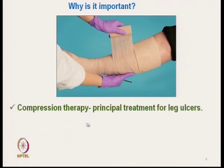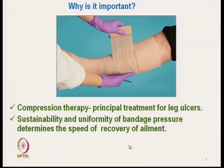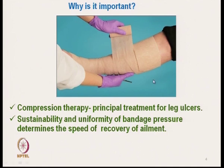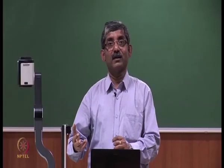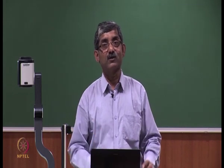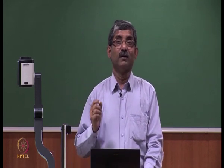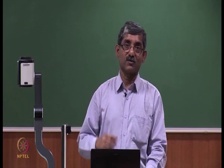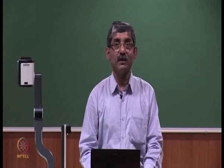Compression therapy is the principal treatment for leg ulcer. The sustainability and uniformity of bandage pressure determines the speed of recovery. We apply pressure through the bandage, but it is very important to understand the sustainability of pressure. The pressure should be maintained, but due to creep or other relaxation characteristics, this pressure sometimes gets reduced gradually — that is called pressure drop. If pressure reduces due to relaxation of the structure, the effectivity of the compression therapy is reduced.